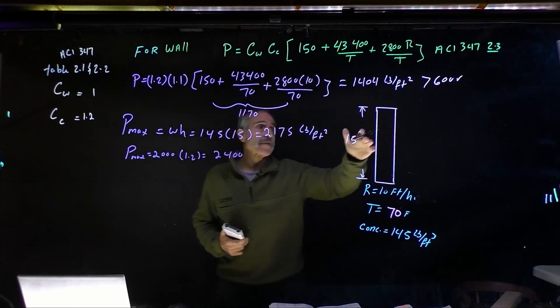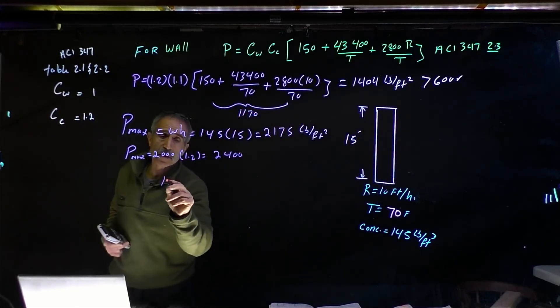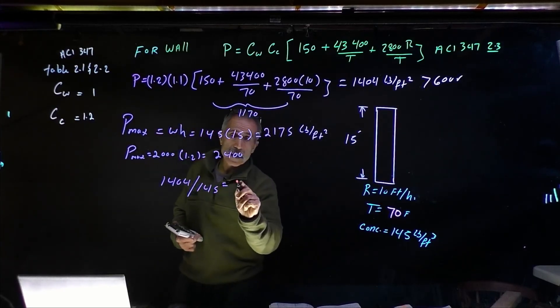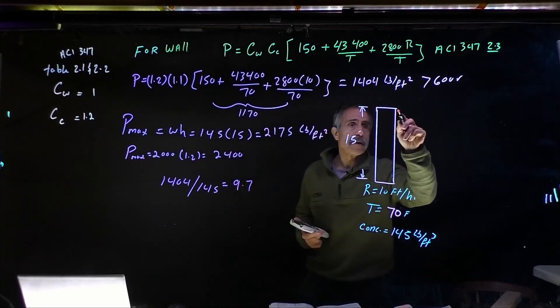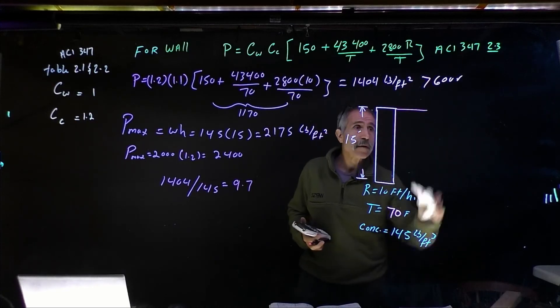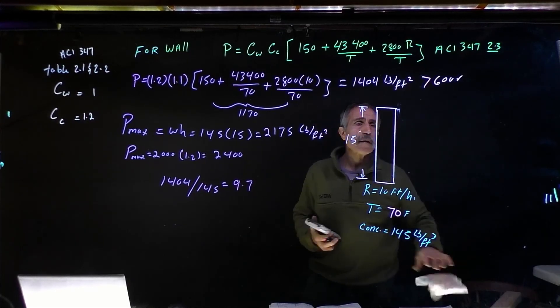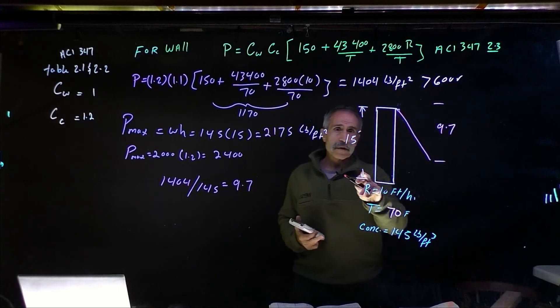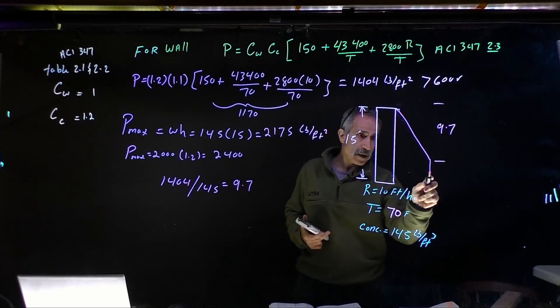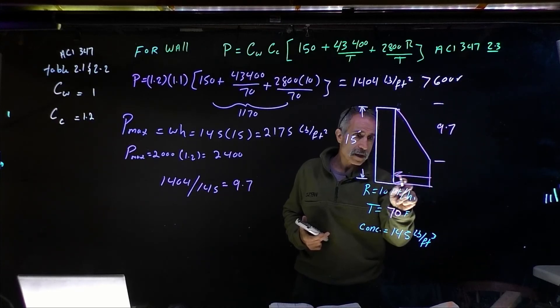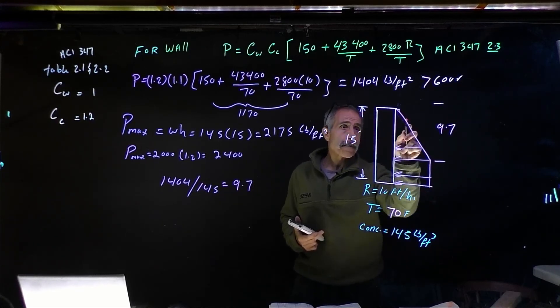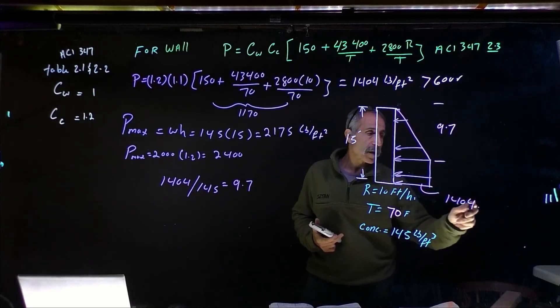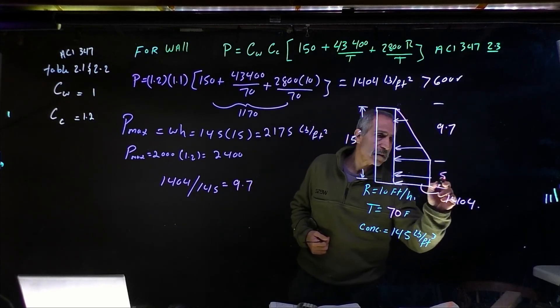Again, we want to know what the pressure is from the top and how much liquid we have. So we're going to have 1,404 divided by 145, that would give me 9.7 feet right here. So from here, I'm going to come out to 9.7 feet. And the form is 15. So come down right here. And this will be my pressure diagram. And this will be basically 1,404, that's what you're going to design for, pounds per square foot. So this will be 5.3.